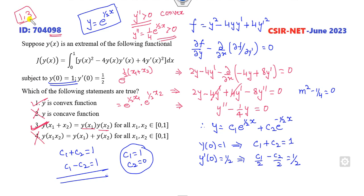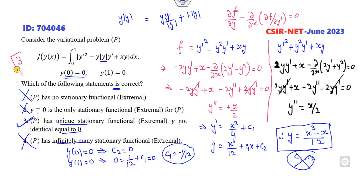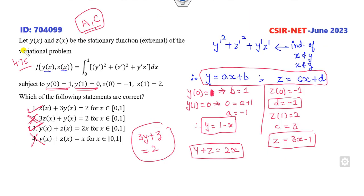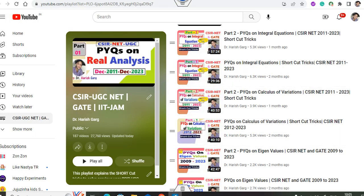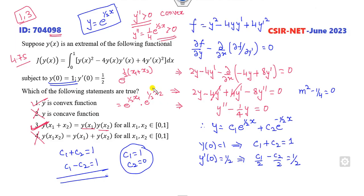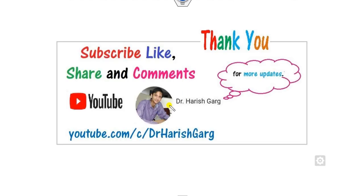These three questions are related to 4.75 marks, 4.75 marks, and 3 marks respectively. You can easily get these answers within a fraction of a second if you watch my previous year questions on calculus of variation. We will see the next lecture on integral equations from June 2023. Till then, please like, share, and comment on my videos. Best of luck students — happy learning always.